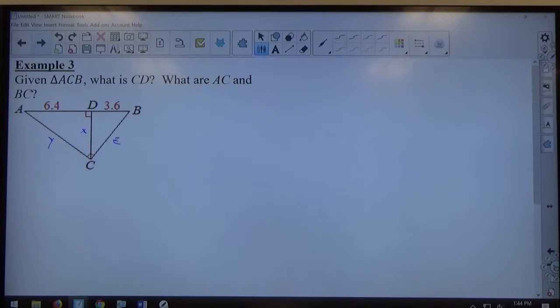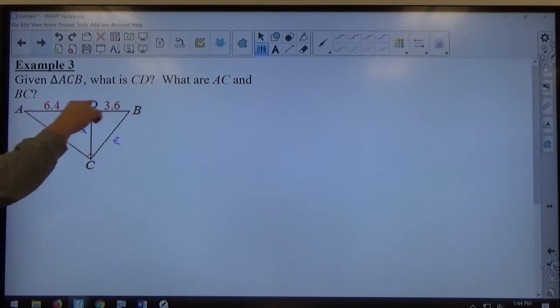And you'll notice this time, going back to the last problem we were talking about, the Pythagorean theorem was usable. This problem with Pythagorean theorem is not usable, right? We don't have enough information. We only have one side of the right triangle, we only have one side, and then we only have one side for the big one.